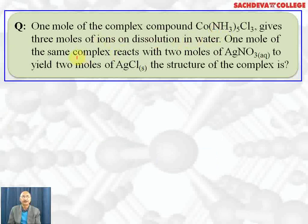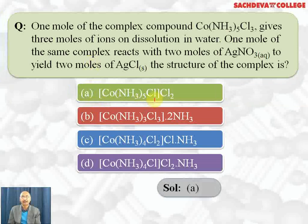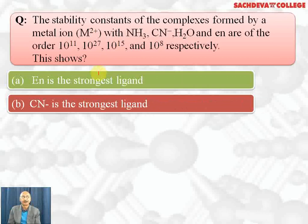One mole of complex [Co(NH3)5Cl]Cl2 gives three moles of ions on dissolution in water, and one mole reacts with two moles of AgNO3 to give two moles of AgCl. The correct structure is option A. Regarding stability constants of complexes formed with ammonia, cyanide, water, and en — the values are 10¹¹, 10²⁷, 10¹⁵, and 10⁸ respectively — this shows that cyanide is the strongest ligand.